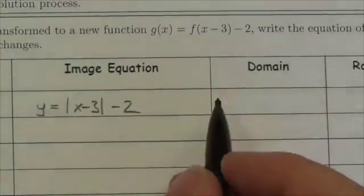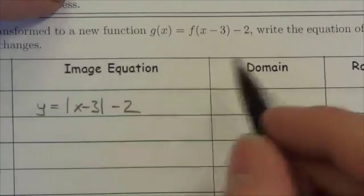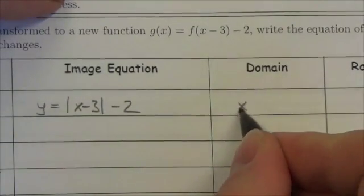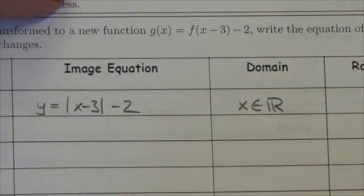Now, my domain, think about what the absolute value function looks like. Its original domain was element of the reals. These two translations won't change that, so the domain will still be element of the reals.